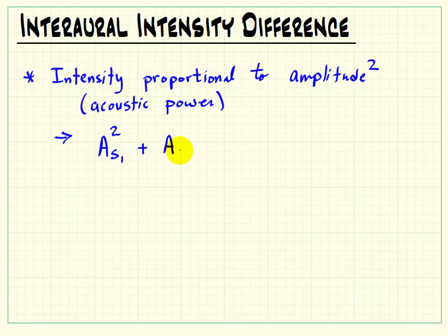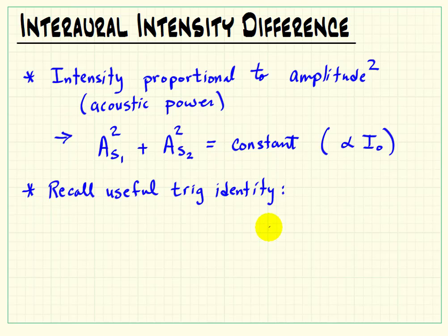Now phrased in terms of amplitudes, we would then say that the square of the amplitude associated with speaker 1 plus the square of the amplitude associated with speaker 2 must be a constant. Now since I had earlier said proportional, I'll just say that these are proportional to our max intensity I naught. Now you might recall a useful trig identity at this point, which states sine squared of theta plus cosine squared of theta is 1.